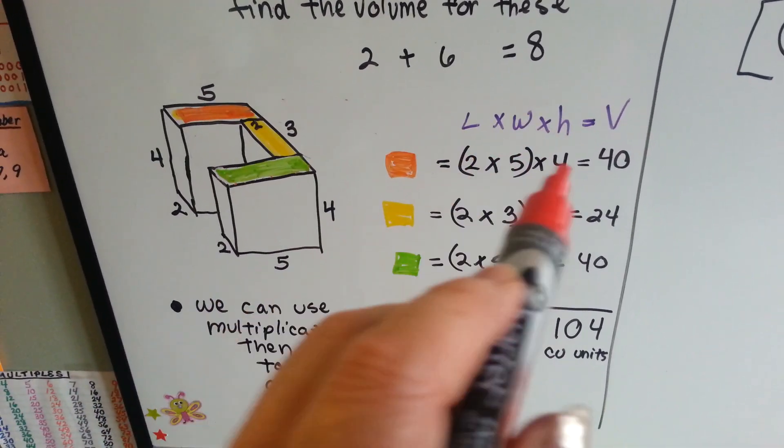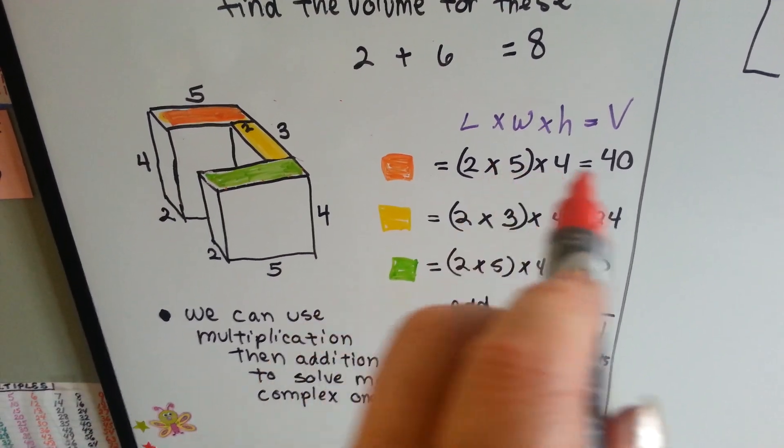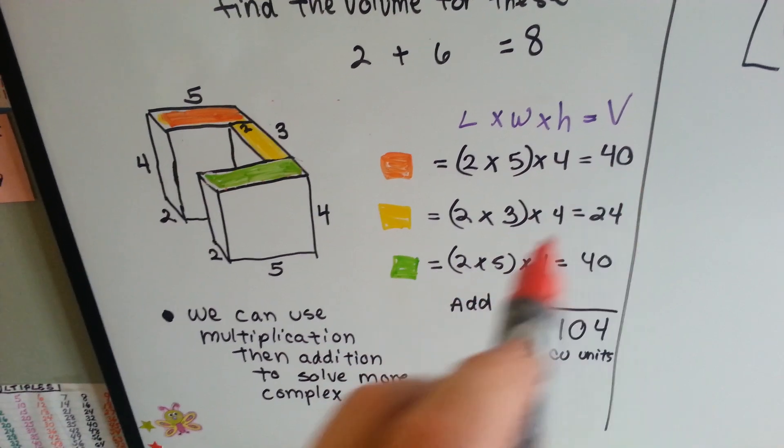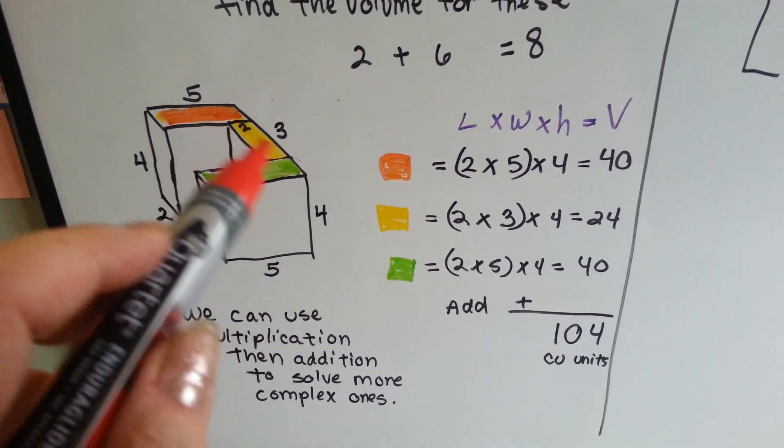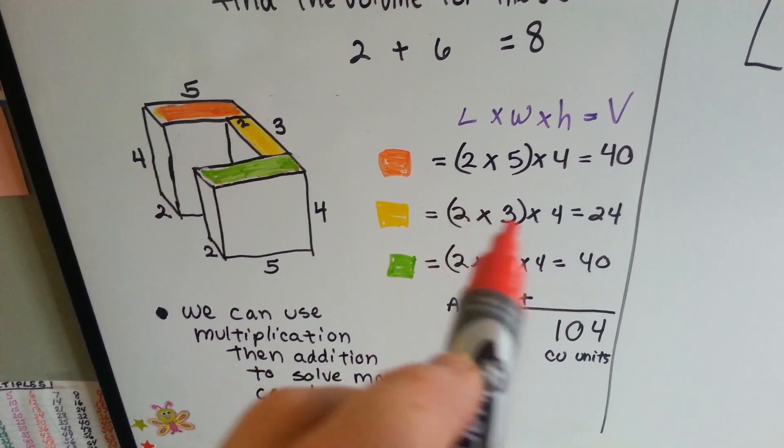For the length times width times height, for the orange one, we have 2 times 5 times 4. That's 40. 10 times 4 is 40. And for the yellow one, we've got 2 times 3 times 4 height. That gives us 24. 6 times 4.